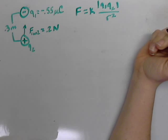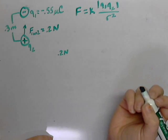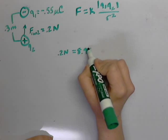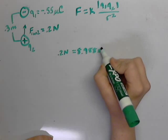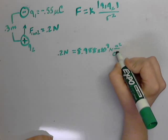Let's go ahead and plug in the values that we have. 0.2 newtons, we have K which is the constant, 8.988 times 10 to the 9th newtons meters squared per coulomb squared.